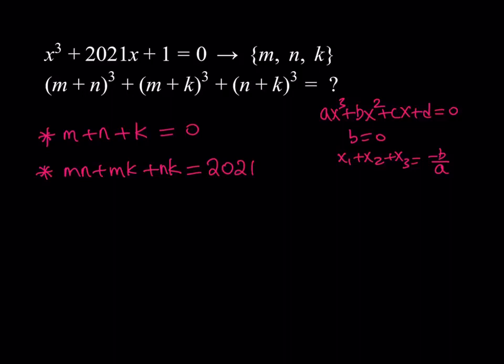And the product of all three roots, which is −d/a, in this case is going to be −1. You can look at the Vieta's formulas video for reference.